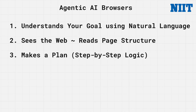Third, it makes a plan. Based on your goal, the agent breaks the task down into small logical steps. It may think: first I'll search for flights, then I'll look for hotels, then I'll find reviews. It may also use any tools available to achieve its task — these could be third-party integrations required to achieve the end objective — so deciding which tool to use requires this plan.